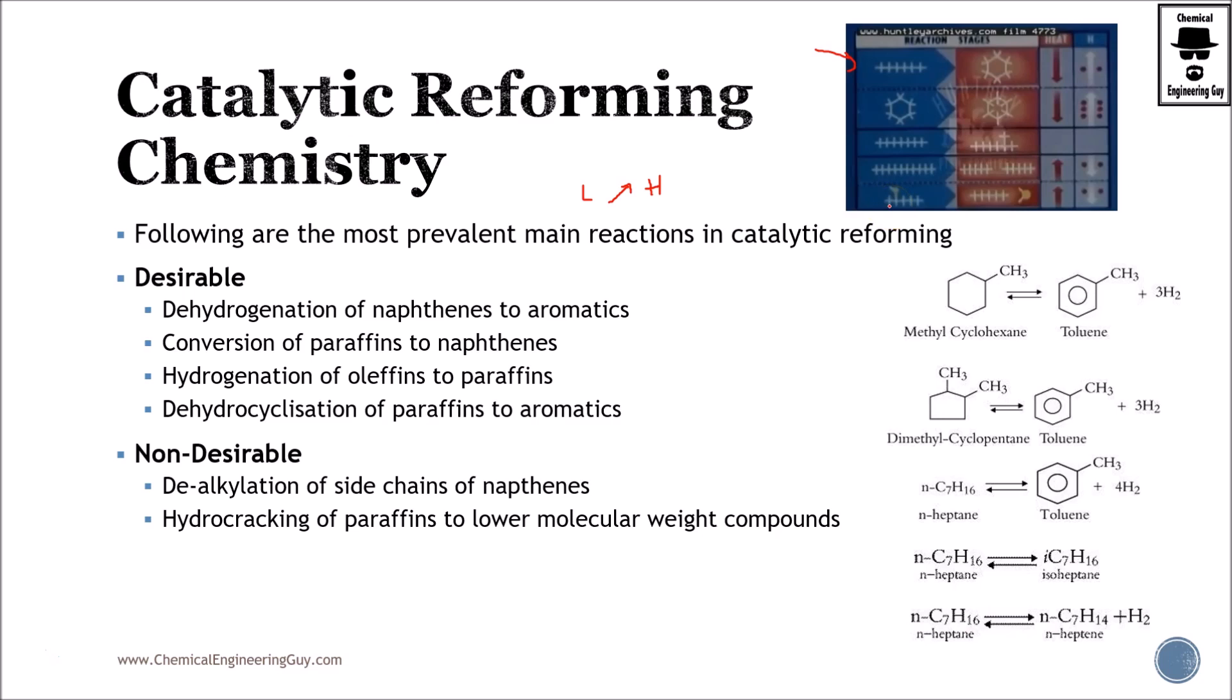This table shows you very fast what is the main idea of catalytic reforming. Typically what you want to obtain is the dehydrogenation of naphthenes to aromatics. You have a naphthene, which is nothing more than a cyclic molecule which is not aromatic. You're going to remove hydrogen and convert it to an aromatic compound. This is very high in octane.